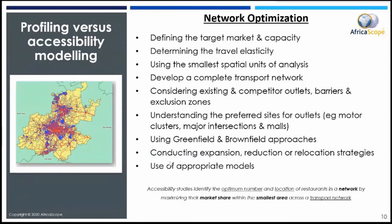In terms of retail network development, there are two critical concepts: greenfields and brownfields. Greenfields analysis is where you look at the market as if there are no existing retail outlets, and one utilizes the combined parameters of capacity and travel time to see how many outlets of different sizes and types this particular market can bear. The difference with brownfields is that it takes into consideration the capacity and travel time, but in addition to that, it takes into consideration the existing retail outlets of a particular brand, competitor brands, and the preferred sites across a transport network — so it's significantly more holistic.